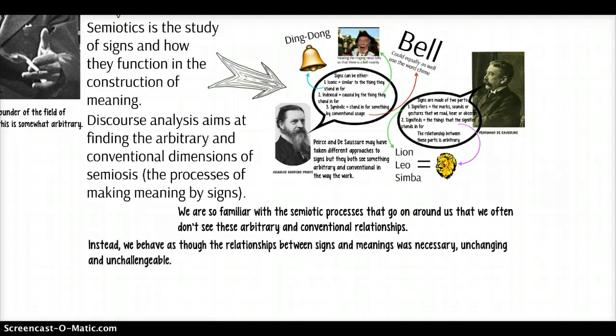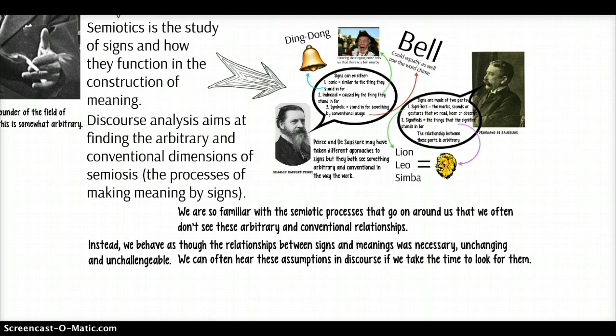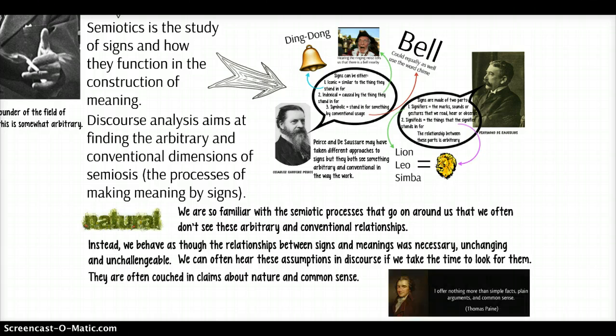We behave as though some of the meanings we work with aren't arbitrary and conventional — that the world could be chopped up in other ways. We could use different sounds to mean the same objects, or divide the objects we're referring to up differently. This arbitrariness tends to disappear from us just as quickly as we start to interpret signs. But we can sometimes recover the assumptions about arbitrariness by listening carefully to the language — and that's what discourse analysis does.